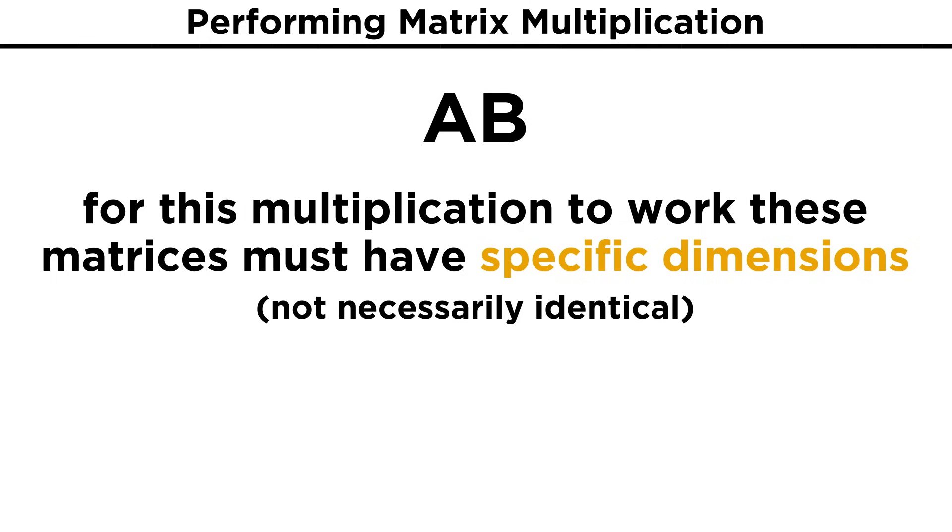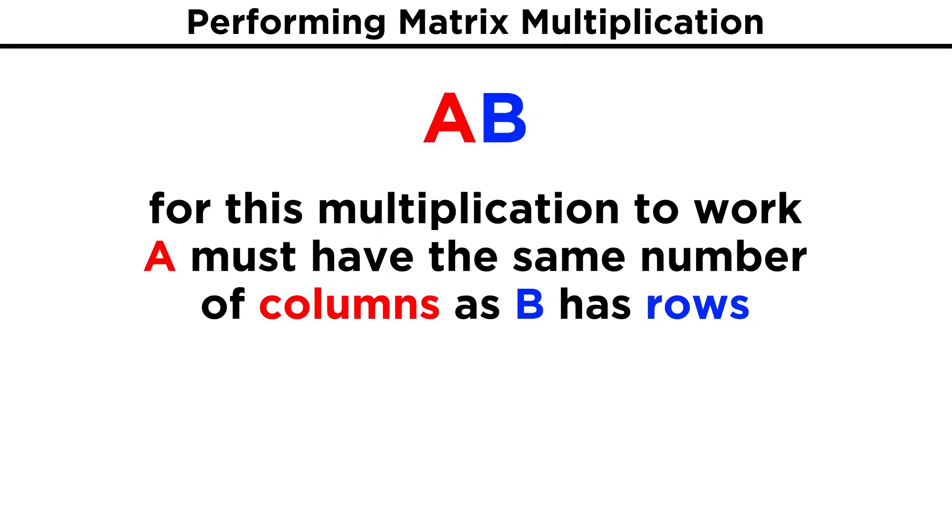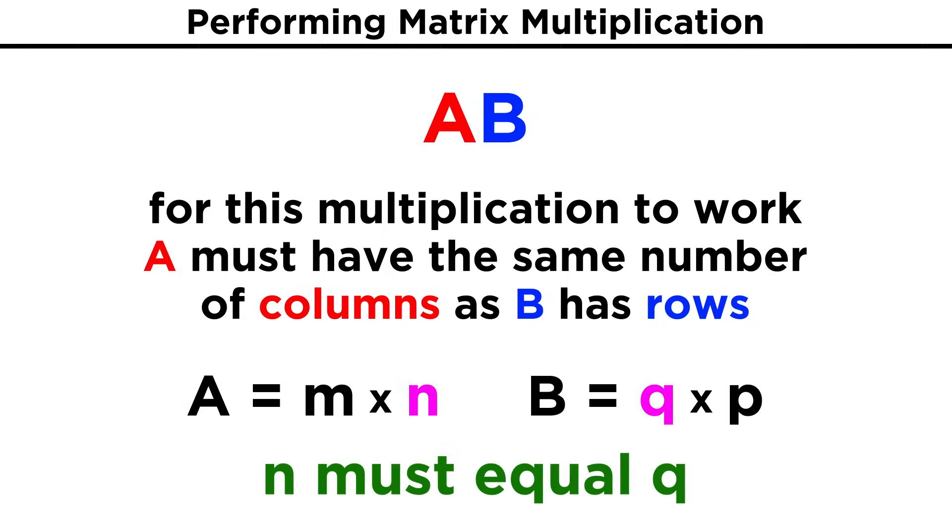The first thing we must learn is that in order for two matrices to be multiplied, they must have a specific relationship in terms of their dimensions, and it is not the case that they must have identical dimensions. Rather, if two matrices A and B are being multiplied with A listed first, followed by B, it will be the case that A must have the same number of columns as B has rows. The reason for this will be clear in a moment.